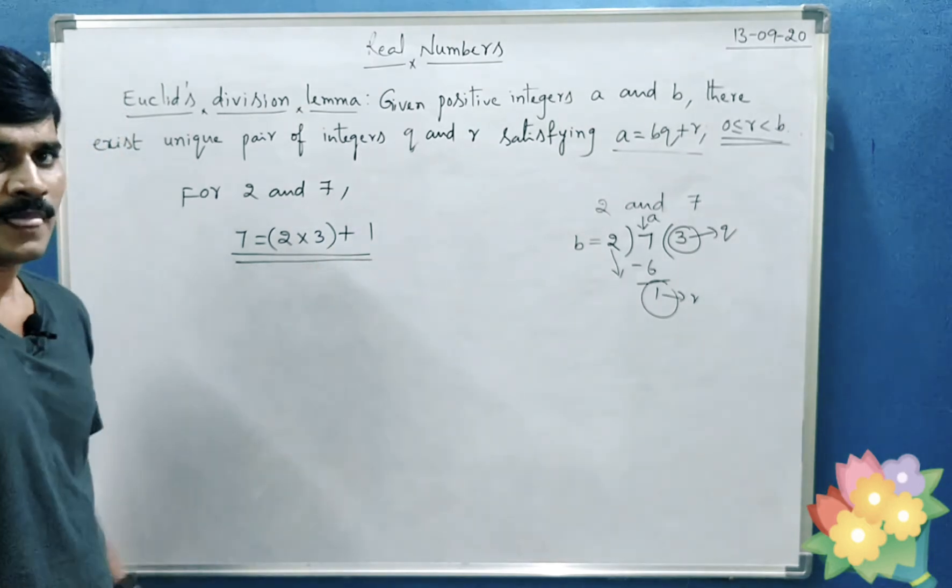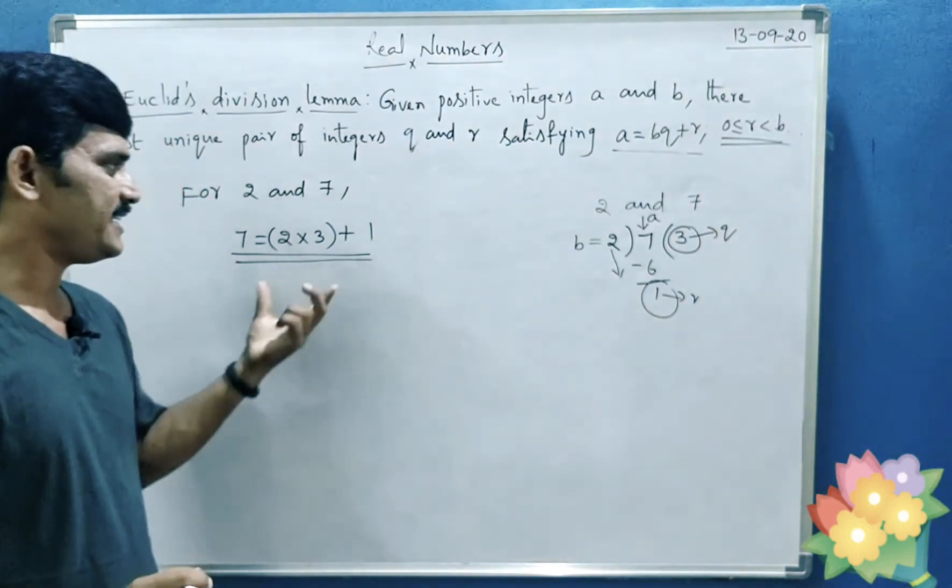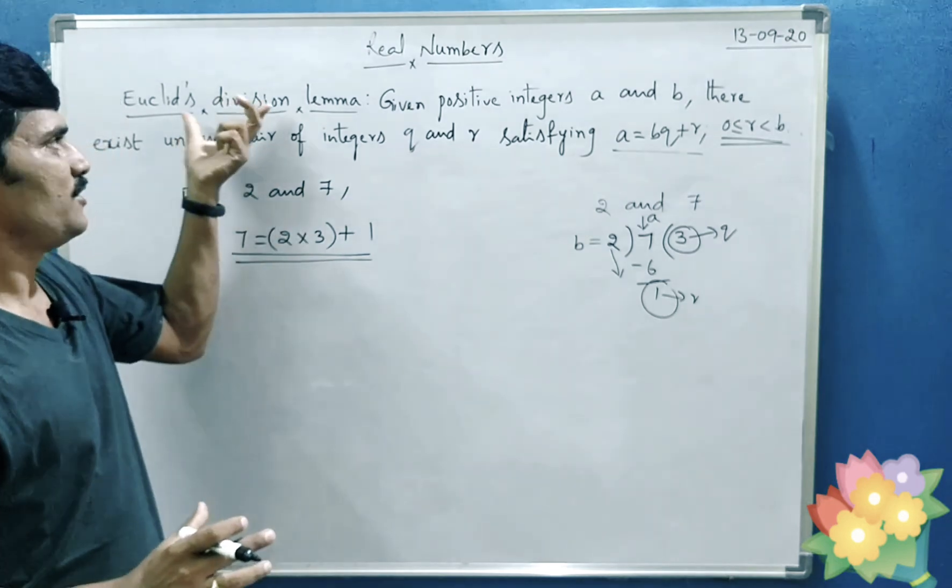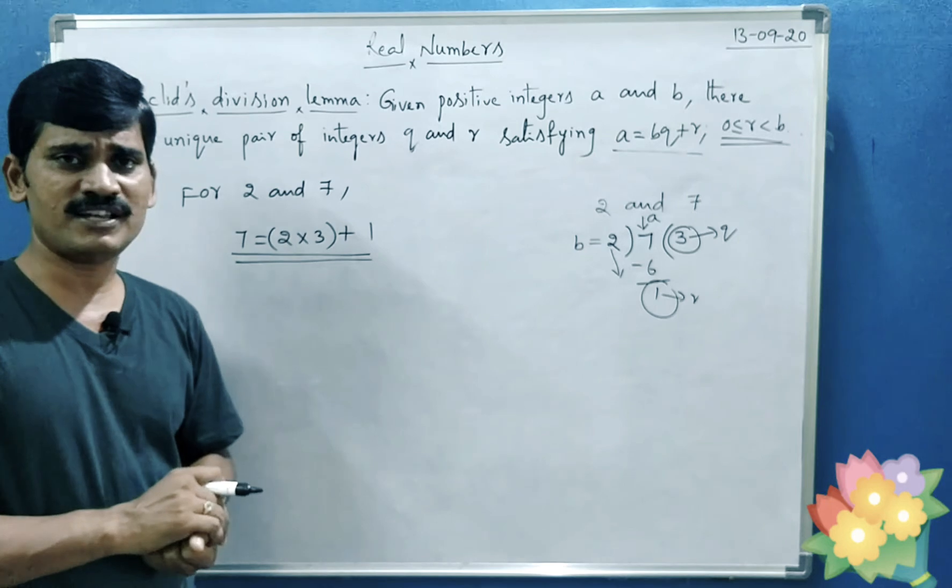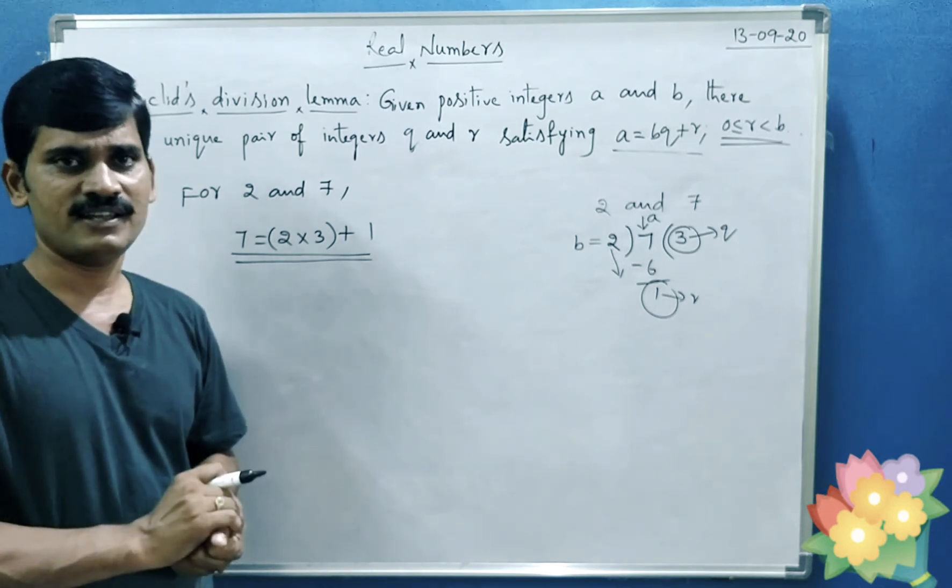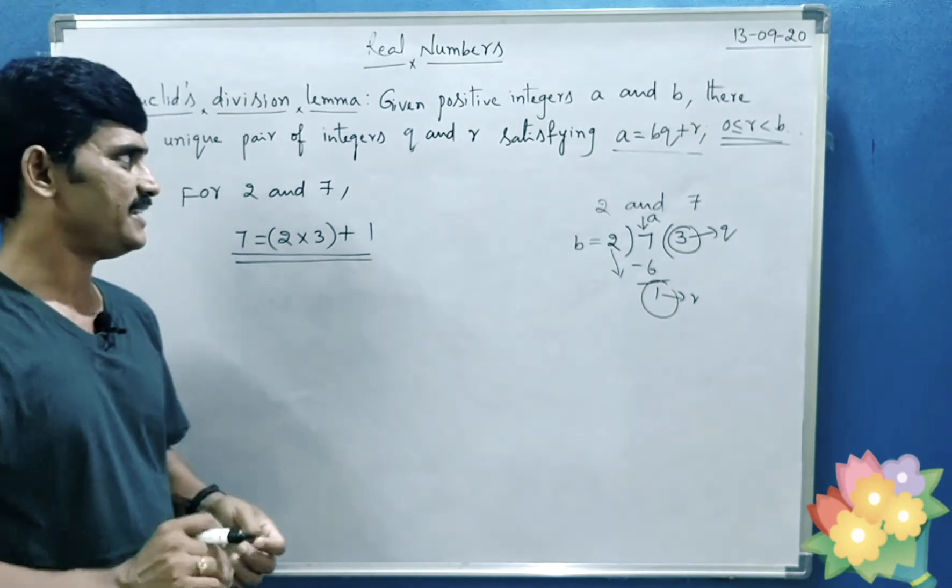So the process of writing in the form of equation is called Euclid's division lemma. By using this Euclid's division lemma, you can find the HCF of any two positive integers.